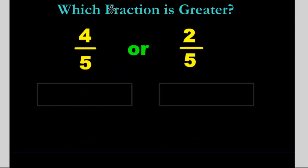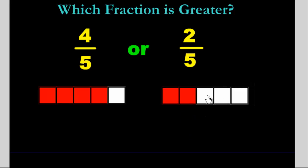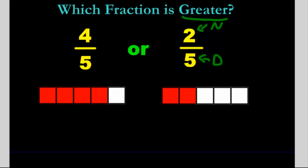How about these two — is four fifths greater or two fifths greater? Draw a picture. I'm drawing rectangles here, keep it simple. I colored four pieces — the five means I have five pieces altogether. This one also has five pieces but I can only color two. The denominator tells us how many pieces we have altogether, and the numerator tells us how many we've selected. Which is greater? It's four fifths — it's more.